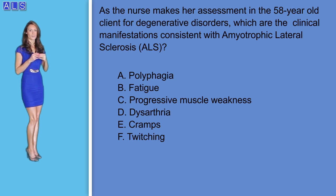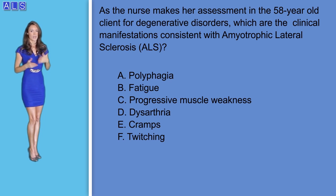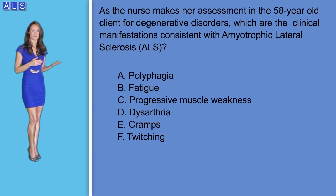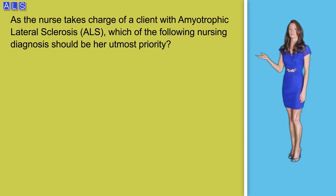This question tests your ability to recognize medical terms. When approaching select-all-that-apply questions, approach each option one by one. Option A — polyphagia means excessive hunger, and this is not a symptom of ALS. Option B — fatigue is one of the first and most common signs and symptoms of ALS, similar to Option C — progressive muscle weakness, making both correct. Option D — dysarthria means difficulty speaking or saying words, which is definitely true for ALS. Option E — cramps is also correct, as progressively limiting muscle strength and limited movement can cause cramps. The same is true for Option F — twitching. The correct answers are B, C, D, E, and F.